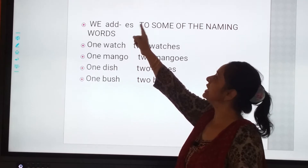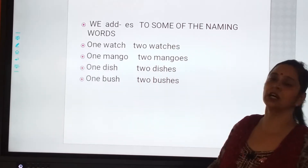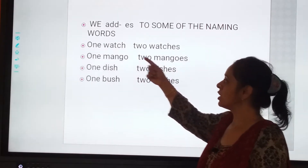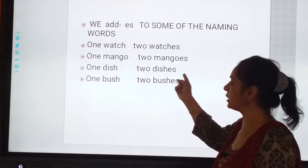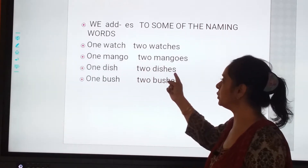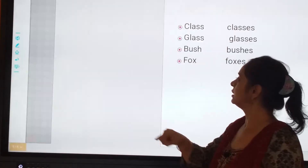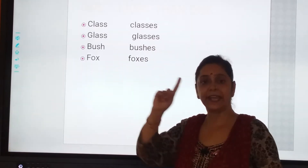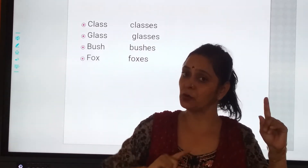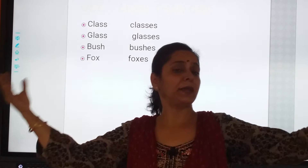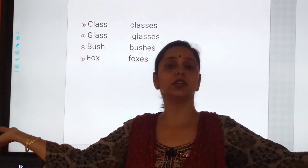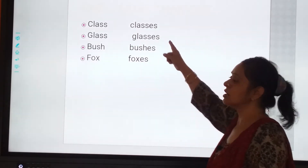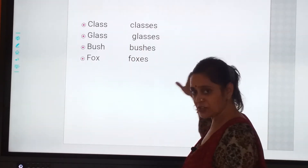We are going to use ES with some of the naming words. One watch, two watches. One mango, two mangoes. One dish, two dishes. One bush, two bushes. Class — if there are many classes in the school, toh aap kya lagayenge? ES. Glass, glasses. Fox, foxes.